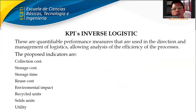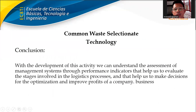The proposed indicators include: polyester codes, external codes, externalized time, reduced codes, environmental impact, residuary unit, and solid unit utility.